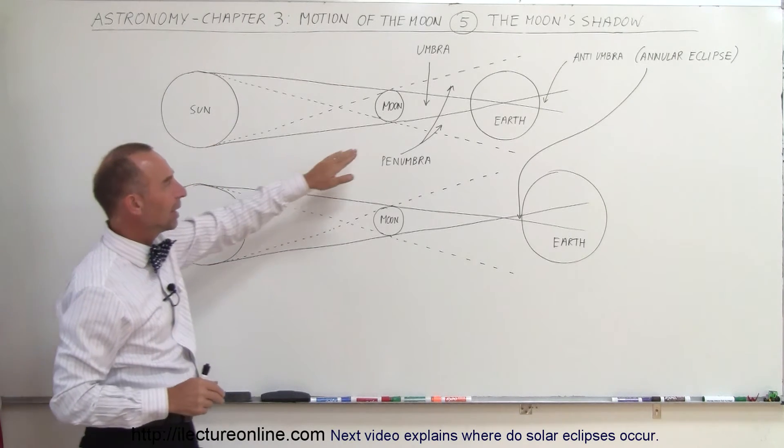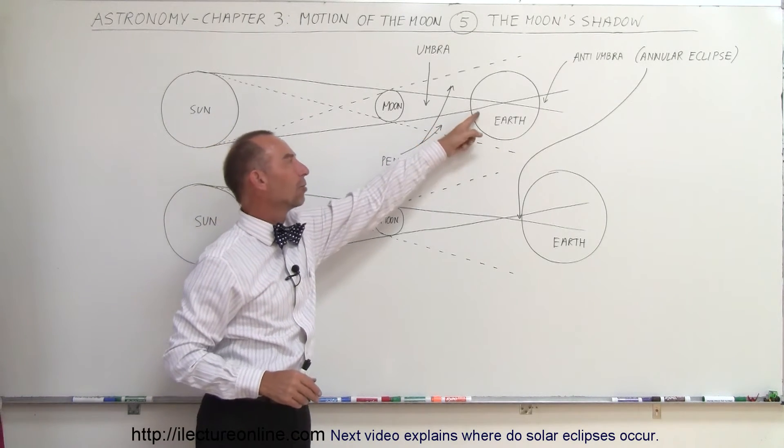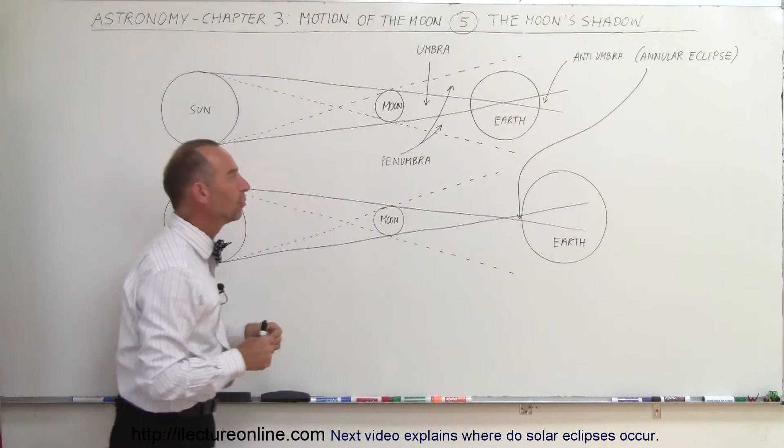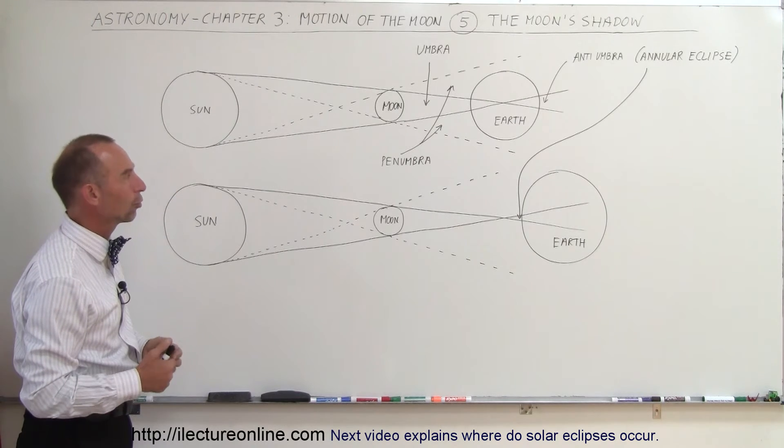So the light is diminished a fair amount there. And so in these regions right here and those regions right there, we would see a partial eclipse, a partial solar eclipse, not a total solar eclipse.